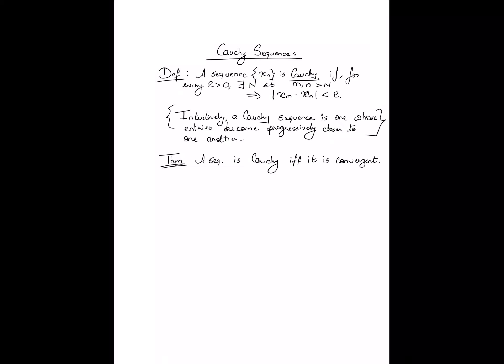The limit exists — you just don't have to identify it in order to say that the sequence is convergent. Since this is an equivalence statement, there are two parts to the theorem. Part one is to prove that convergence implies Cauchy, and this one is actually fairly straightforward.